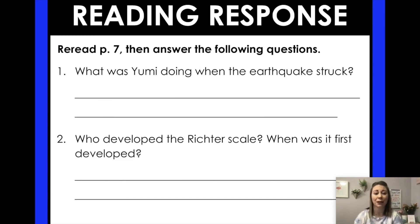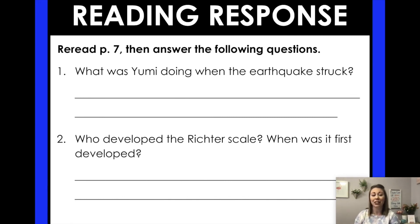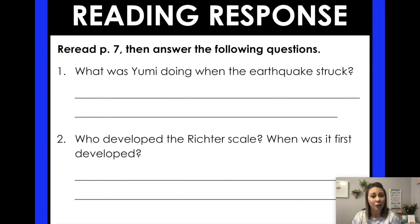For your reading response today, you have two questions and you really need to make sure you're using text evidence. Reread page 7 and answer: number one, what was Yumi doing when the earthquake struck? And number two, who developed the Richter scale and when was it first developed? Both of those are right-there questions — you can find the answers right in the text. Be sure to use that text evidence so you can answer correctly, and answer in complete sentences.